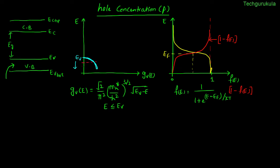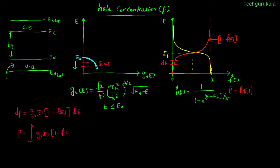In order to find the hole concentration in a small energy range dE, we know the density of states in this range and the probability of these energy states being empty is given by 1 − F(E). In this differential energy range, the hole concentration is dP = gV(E) × (1 − F(E)) × dE. To find the total hole concentration in the valence band, we integrate both sides: P = ∫ gV(E) × (1 − F(E)) dE, where the integration limits are EV_bottom to EV.